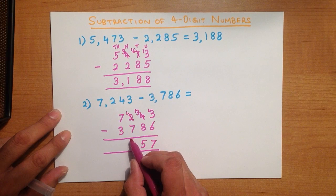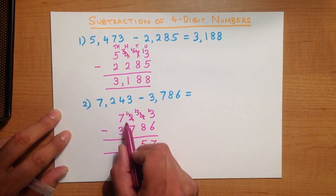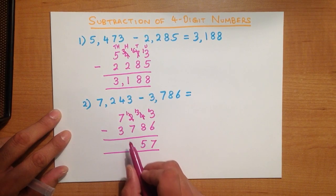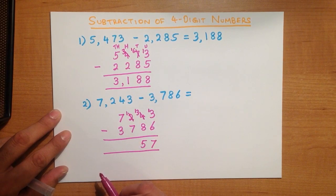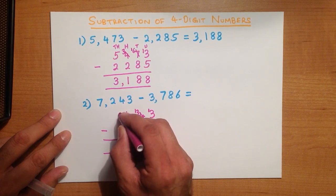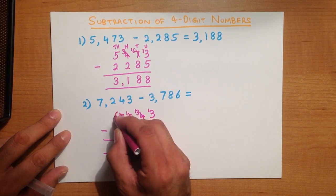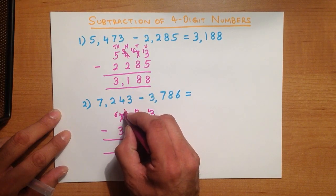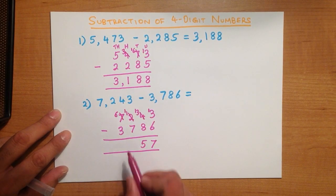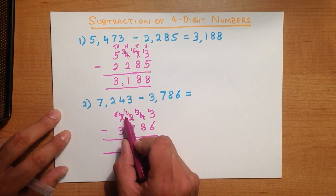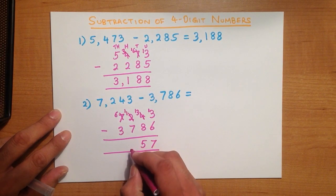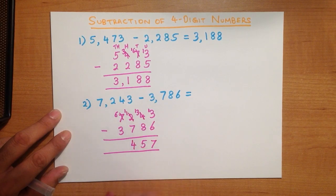We now do the hundreds column, where we have 1 minus 7. We can't do that because 1 is smaller than 7. So we take 1 from the left — cross out the 7, and 7 minus 1 is 6 — and we place that 1 over here. So this column now becomes 11 minus 7, which is 4.